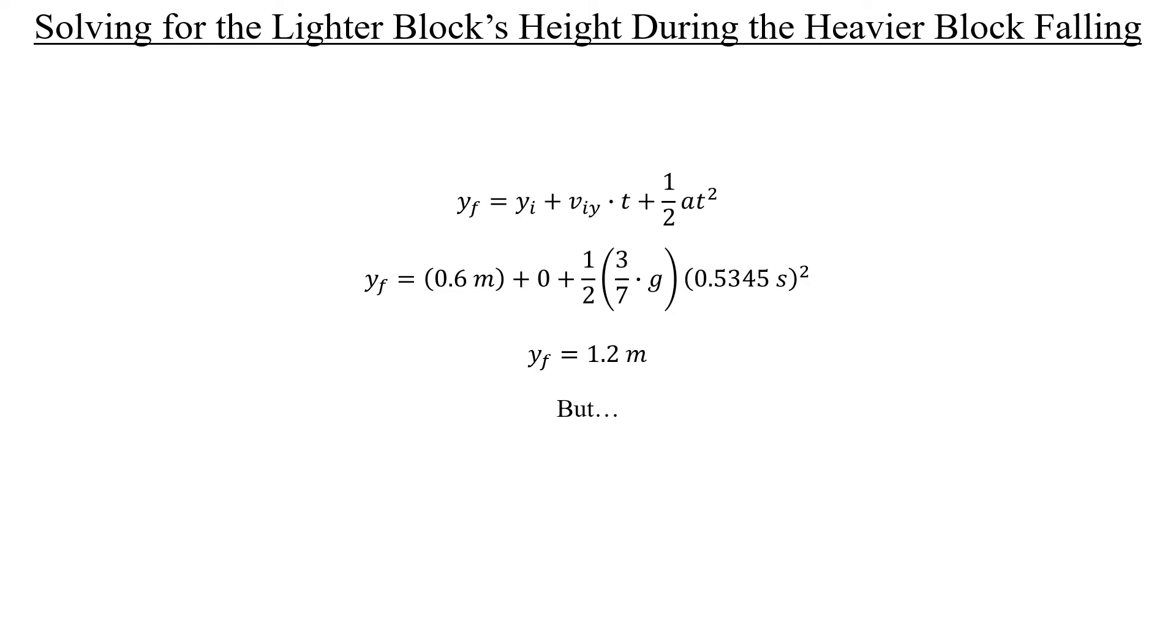However, here is where the problem is trying to trip you up. The lighter block can continue to rise, even if the heavier one stops falling. And you might ask, why? How is that the case? Well, when the lighter block reaches this 1.2 meter height, it will have a non-zero speed. And it can't just instantly go from a non-zero speed to zero speed. It has to move a certain distance in order to slow down. So the idea is that we need to take this 1.2 meters and then add that to the extra distance that the block rises to in the process of slowing down. And once we add them together, that's what y max is.